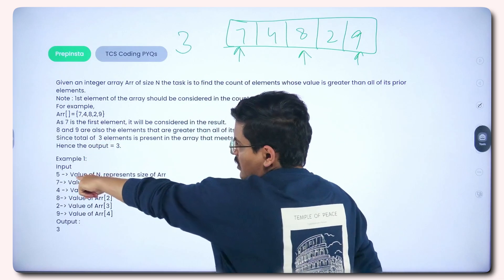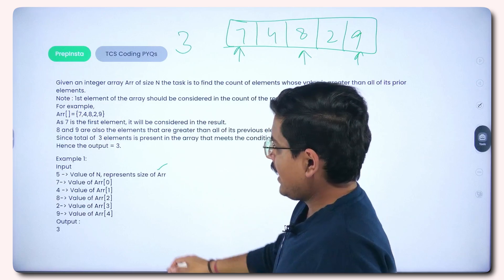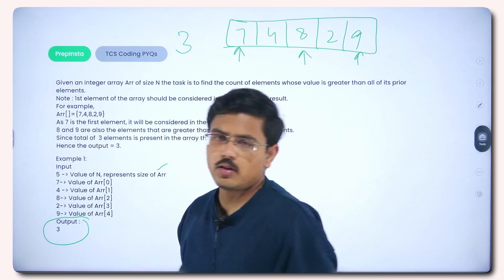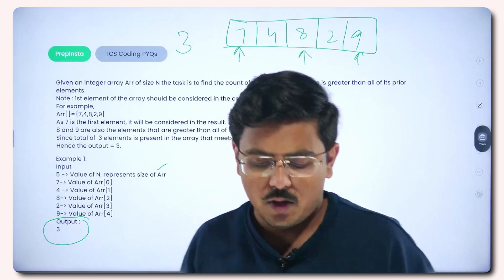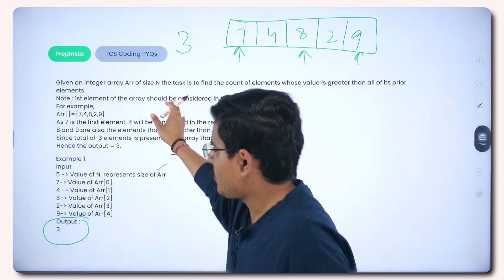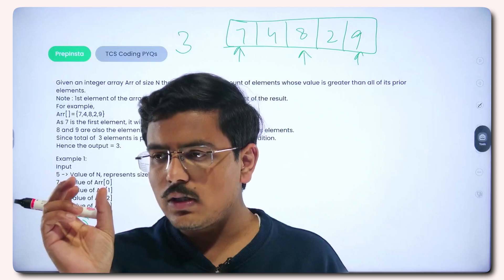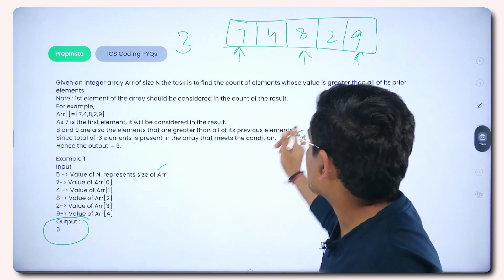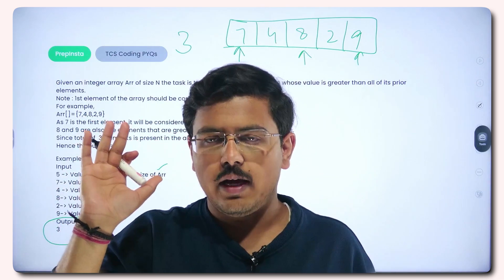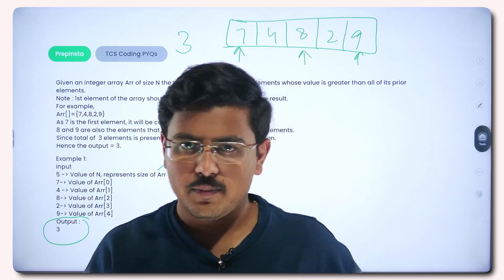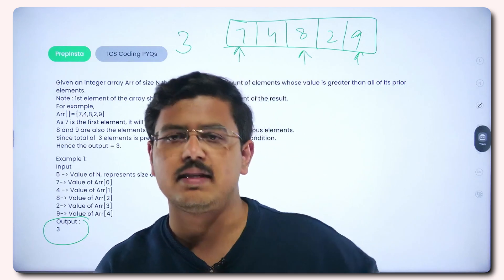So in this case the answer should be 3 — the output should be 3. If I give 5 as the size of the array along with the array values, the output comes out to be 3. The approach is very basic: you need to figure out the size of array n, declare an array to store your numbers, and figure out a variable which stores the maximum value encountered in your array.